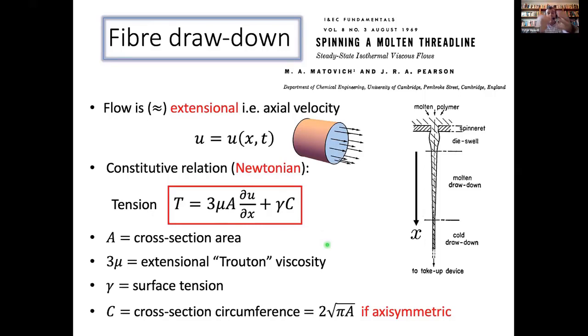And then c is the circumference of the cross-section. So provided you've got a circular fibre, an axisymmetric geometry, well then you can easily relate the circumference to the cross-sectional area. But I'm going to talk a bit later about what happens when the circumference isn't axisymmetric. So you need some other way of closing the problem.